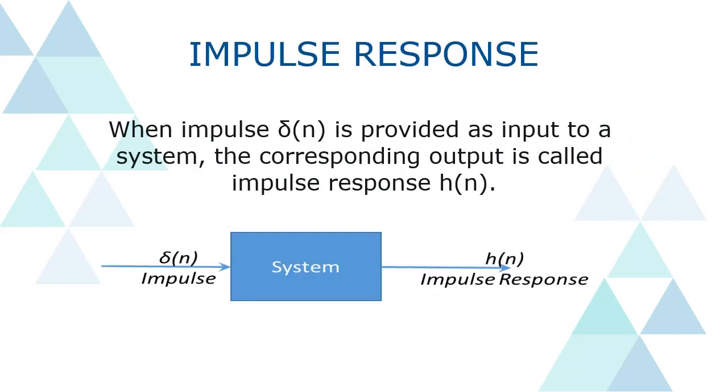Impulse response of a system is defined as when an impulse signal σ(n) is provided as input to a system, the corresponding output is called impulse response h(n).